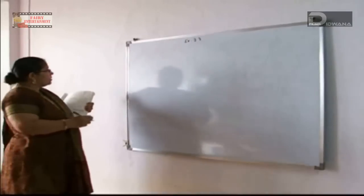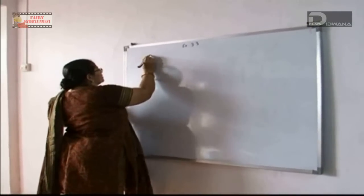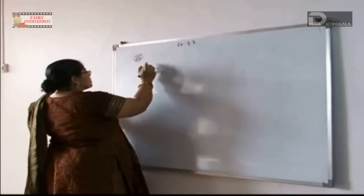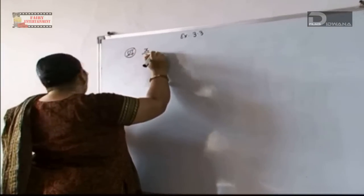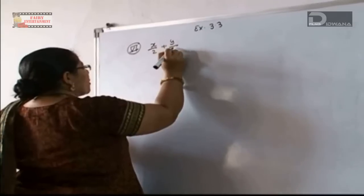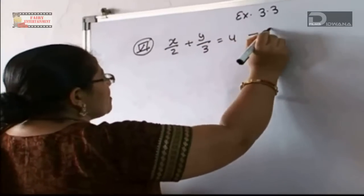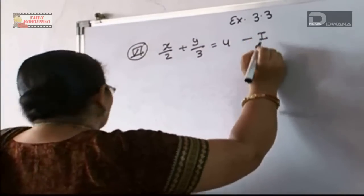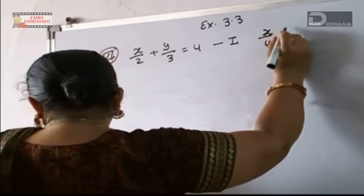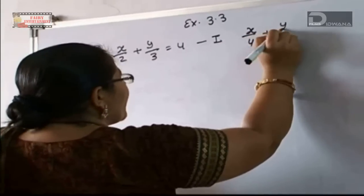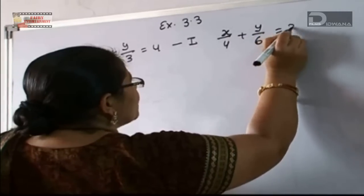This is question number 6. The first equation is x upon 2 plus y upon 3 equal to 4. This is equation number 1. Equation 2 is x upon 4 plus y upon 6 equal to 2.